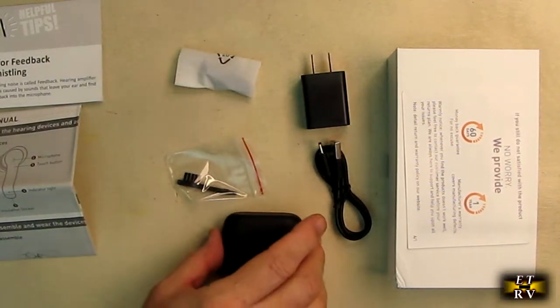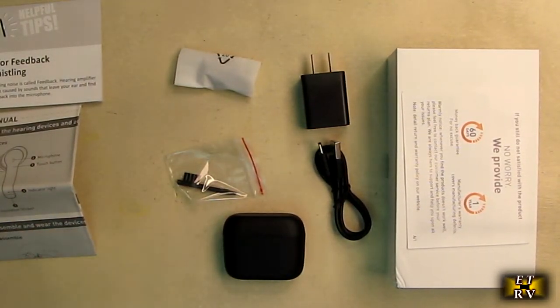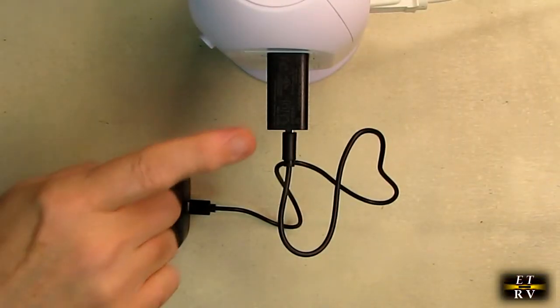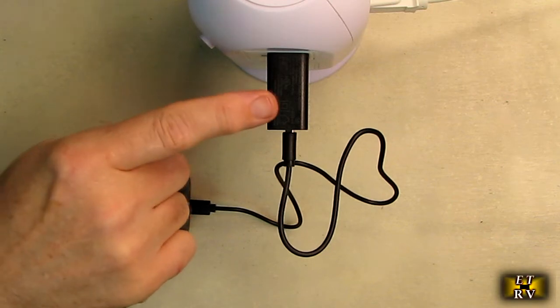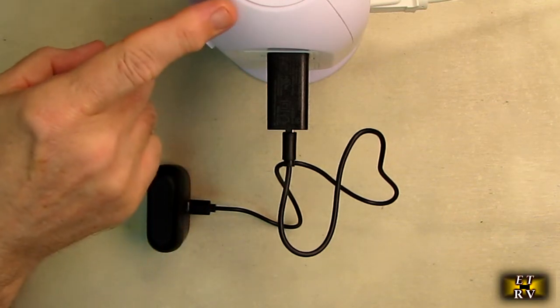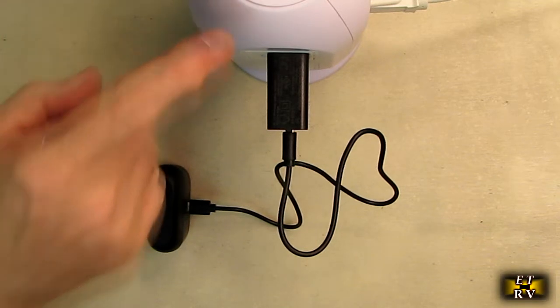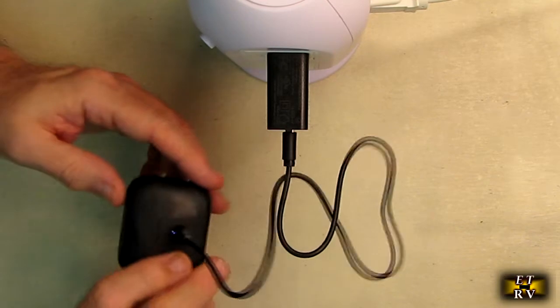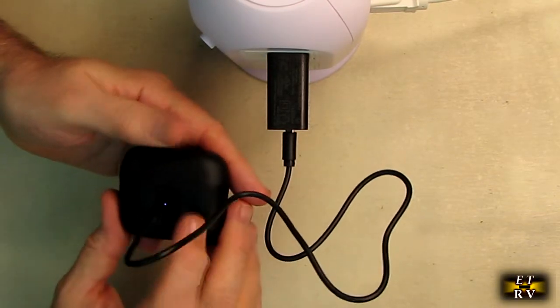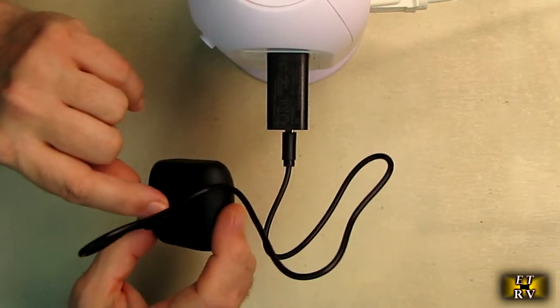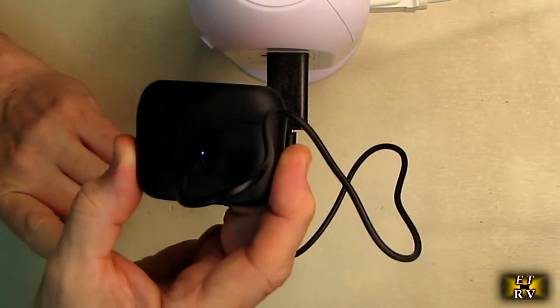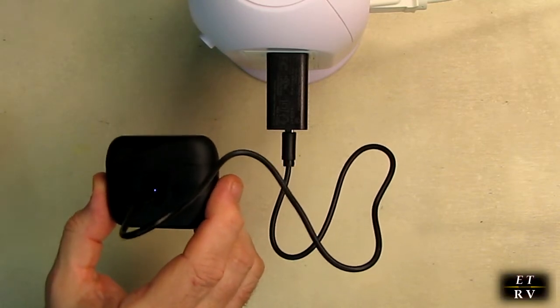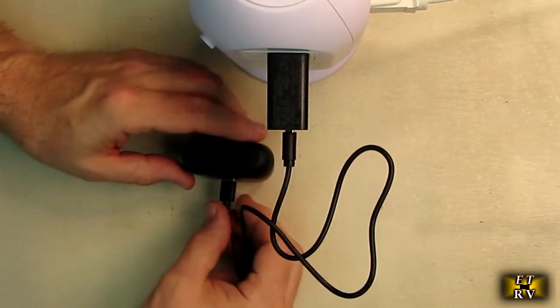To charge the hearing aids is really simple. Just take the included AC to DC adapter plugged into a 120-volt outlet, connect the USB-A, and it goes right into the back of the unit. There's a little LED that's kind of a purple color that should turn to green when it's fully charged.